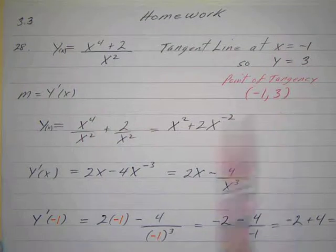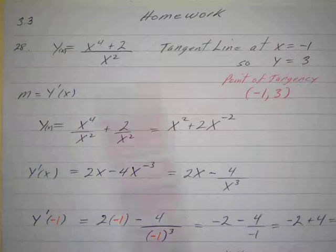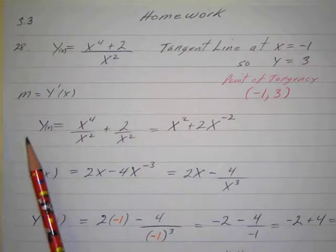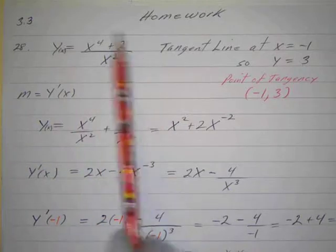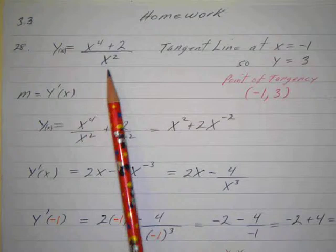So now I want to find the slope, and remember the slope will be the value of the derivative evaluated when x is equal to negative 1. So I have to find the derivative, which is the slope, so I have to take the derivative of this. I don't really want to use the quotient rule if I don't have to, so I can separate this up. Remember, when it's tough, break it up.